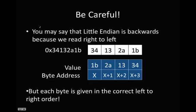All right, and here's another part where people get confused. You may say that Little Endian is backwards because we read it right to left. But you have to be careful when you say that because each byte is given in the correct left to right order. So although we are reading the bytes from right to left, you have to see that this is still 1B. This isn't B1.